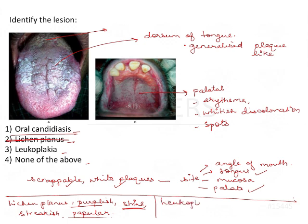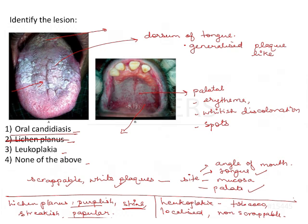Next, leukoplakia. History of tobacco use is important; it would be a more localized patch and non-scrapable. Looking at the first image, we could consider leukoplakia, but leukoplakia of the tongue is not as common as compared to the buccal mucosa. On the palate, it doesn't look like leukoplakia because it has a more generalized erythematous form — so leukoplakia is also eliminated.